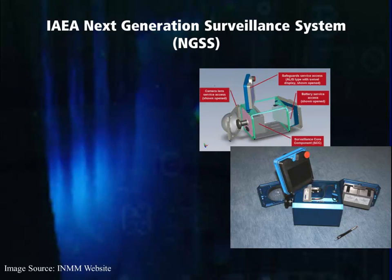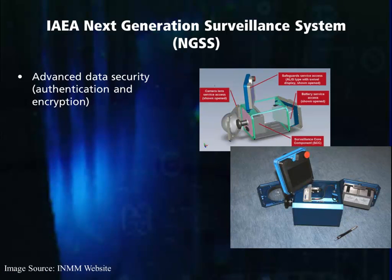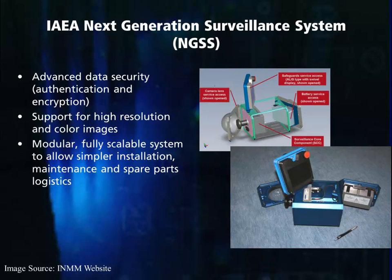In recent years, the IAEA has moved to integrate its surveillance systems. The IAEA's Next Generation Surveillance System is a joint development of the German and United States support programs to the IAEA. When the system was being designed, the design goals were to integrate the surveillance camera and the security critical components into one tamper-indicating, electronically sealed assembly. The agency also wanted higher reliability under harsh environmental conditions and support for modern networking over Ethernet, with possible coexistence with current surveillance equipment. The Next Generation Surveillance System has advanced data security for authentication and encryption, supports high resolution and color images, and is modular, fully scalable, allowing simpler installation and maintenance, spare part logistics, and low power consumption.